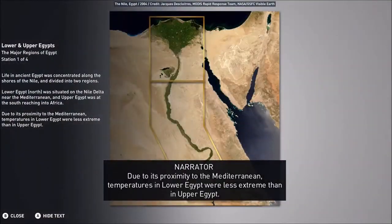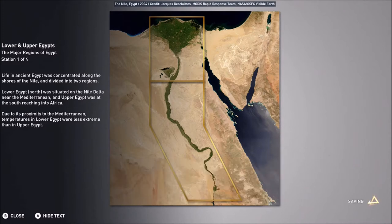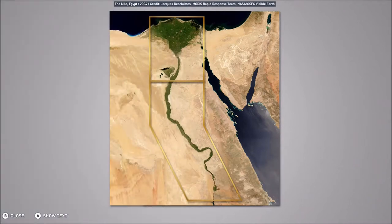Due to its proximity to the Mediterranean, temperatures in Lower Egypt were less extreme than in Upper Egypt. Notice here that Lower Egypt on the Nile Delta is, perhaps contrary to intuitive belief, in the north. This is because Upper Egypt is where the River Nile starts, and it flows down into the northern territory of Lower Egypt.